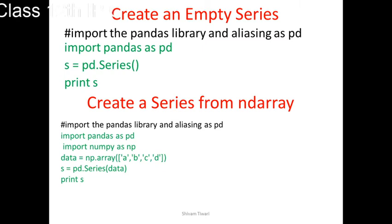Now how to create series from ndarray? Normally data is equal to np.array. So np means np is an object of numpy. Numpy in 11th class we have already discussed.